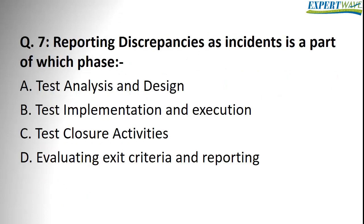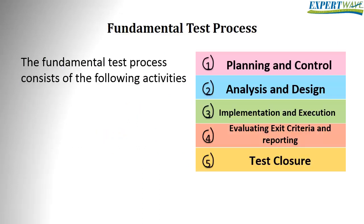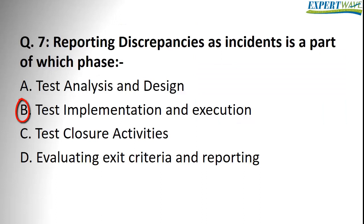Question number seven: reporting discrepancies as incidents is part of which phase? This is a simple one. When would we report discrepancies as incidents — or in other words, when do we report bugs in the fundamental test process? We do that while running and executing the test cases or test procedures, which is done in the execution part of the implementation and execution testing process. So the correct answer is B — test implementation and execution.